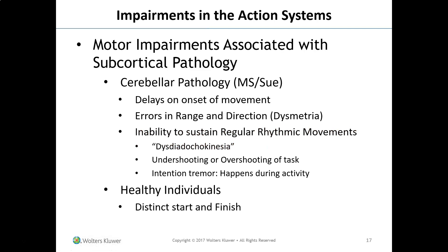Sue has multiple sclerosis — another cerebellar pathology case. Her symptoms include delays in the onset of movement, errors in range of motion and direction called dysmetria, inability to sustain regular rhythmic movements, and dysdiadochokinesia — undershooting or overshooting a task. She also has intention tremors that occur during activity. In healthy individuals there is a distinct start and finish to movement, but with cerebellar pathology the movement is blended together with no clear beginning or end.